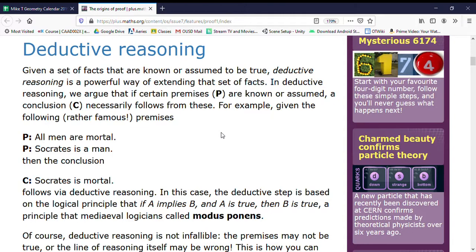For example, given the rather famous premises—all men are mortal and Socrates is a man—then the conclusion is Socrates is mortal. Because if Socrates is a man and all men are mortal, then Socrates is mortal, and that follows via deductive reasoning.